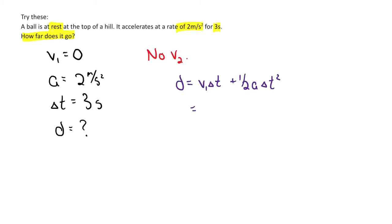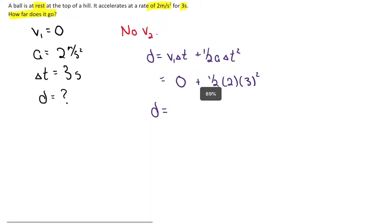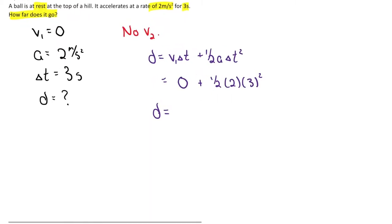The first term is 0 times 3, so that turns into a 0, plus 1/2 of 2 times 3 squared. I can do that in my head. 1/2 of 2 is 1, 3 squared is 9, so my answer here is 9 meters. This object moved 9 meters while accelerating.